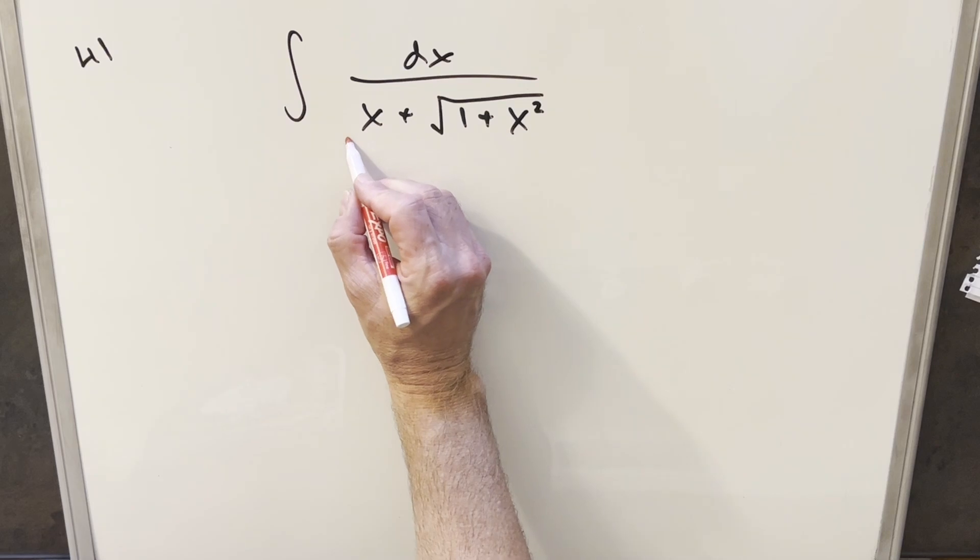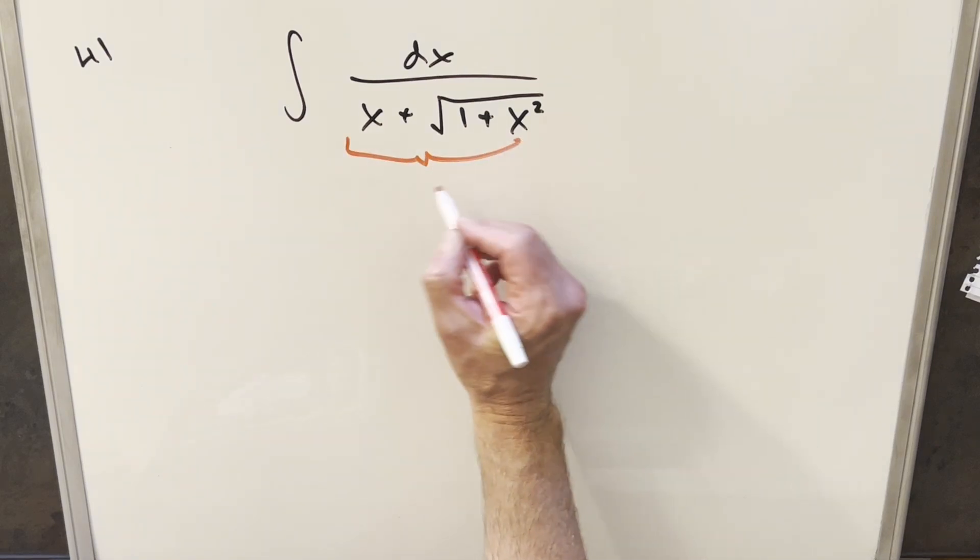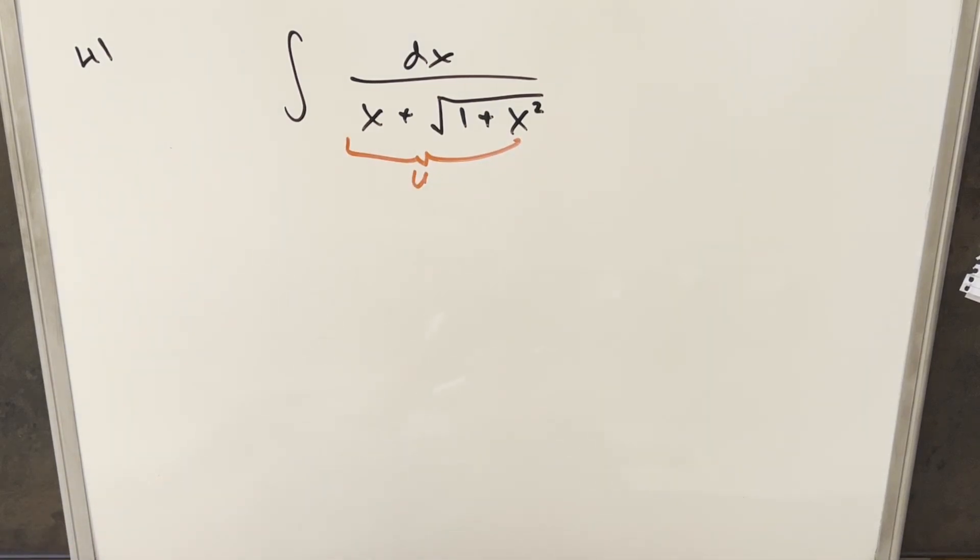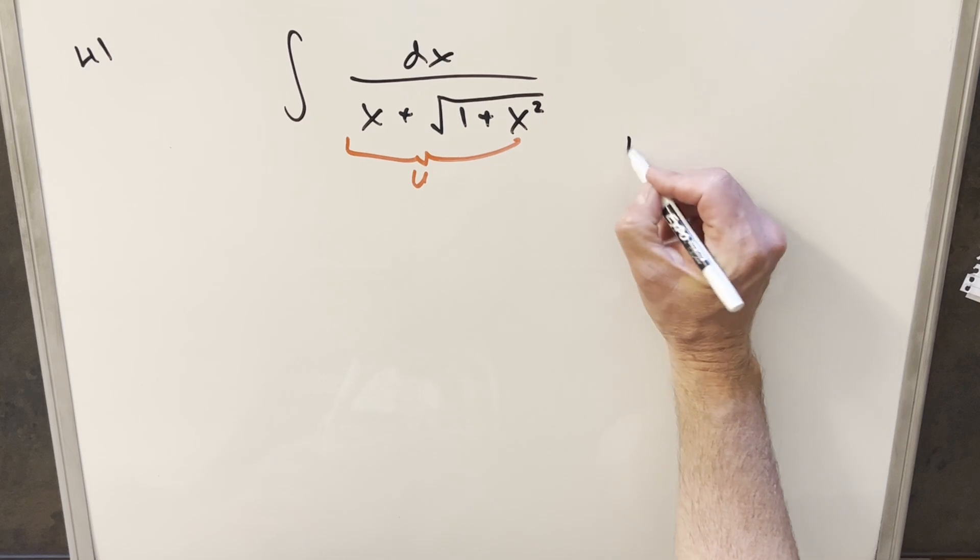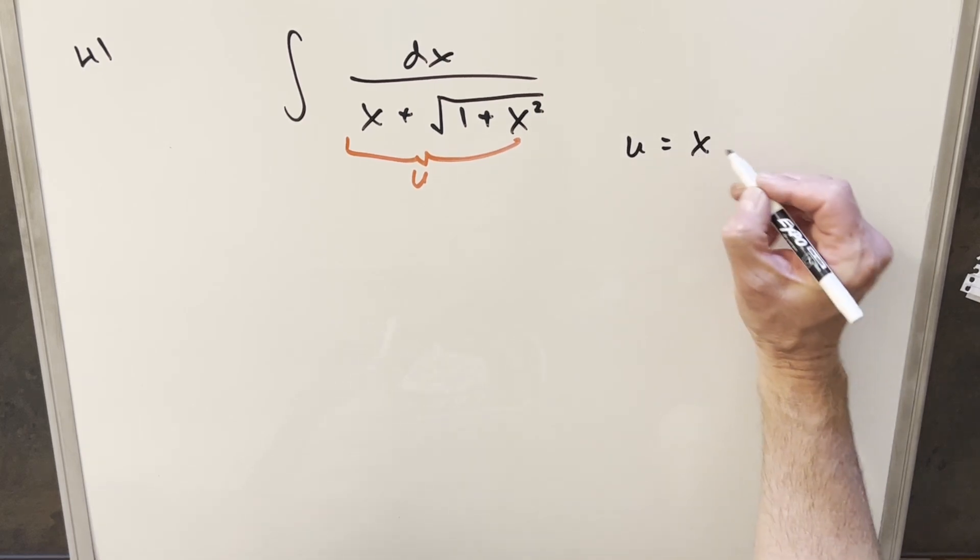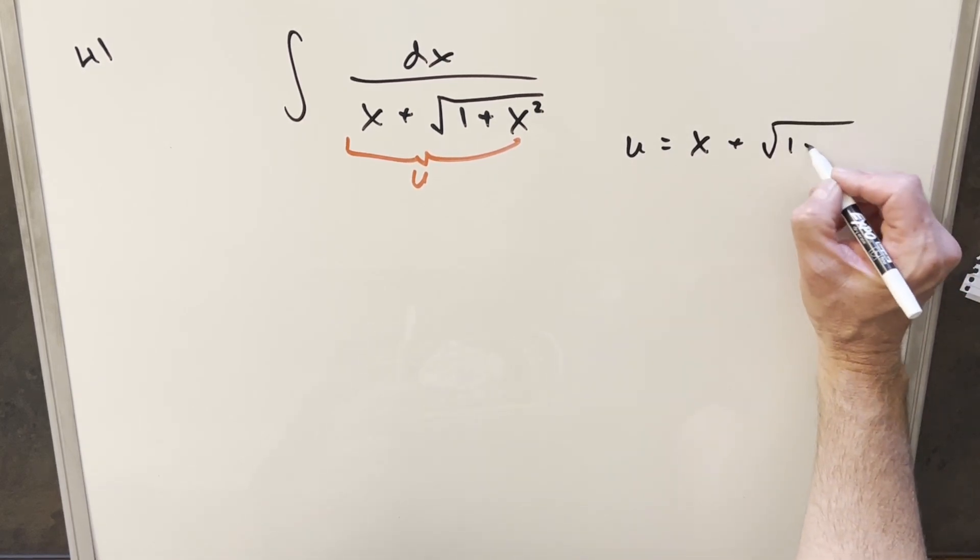To get started with this, what I want to do is the straightforward thing and do a u-substitution for this whole denominator here. So we're going to have u equal to x plus square root 1 plus x squared.